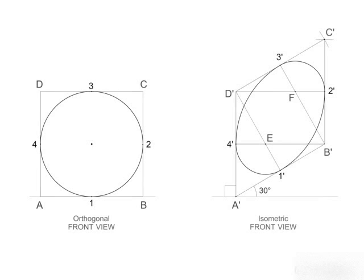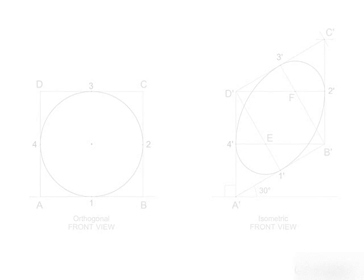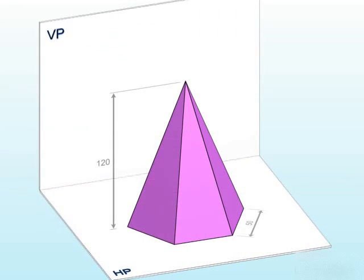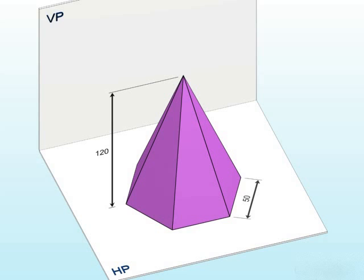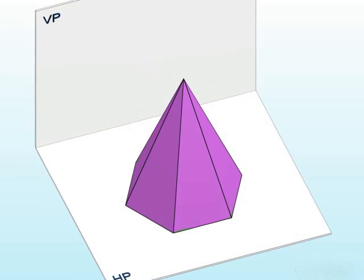Similarly draw two arcs joining 4 dash 1 dash and 2 dash 3 dash respectively. The ellipse obtained is the isometric view of the circle.